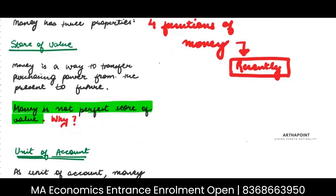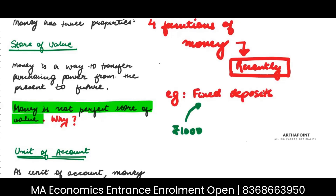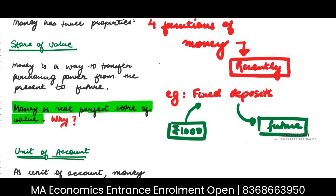The first function is called store of value. By store of value, I mean any way in which I can transfer purchasing power from the present to the future. For example, when I put money in a fixed deposit, I am saving my money today in the bank, and I can withdraw this money from the bank in the future. That is where money acts like a store of value.